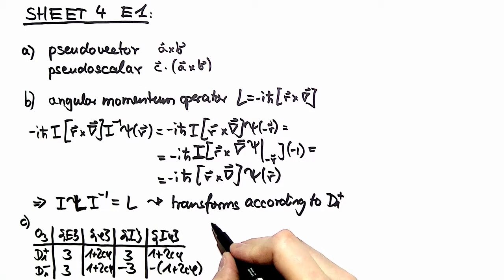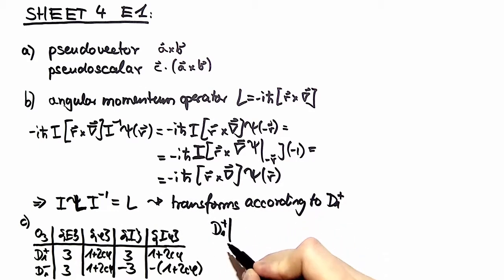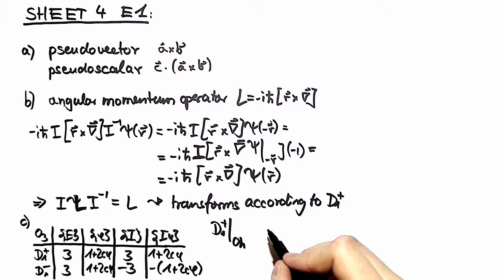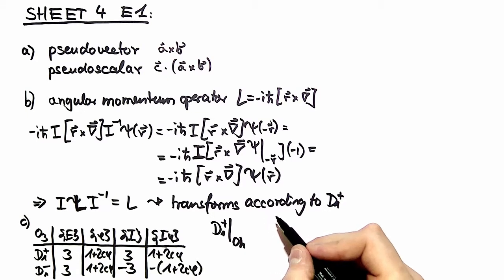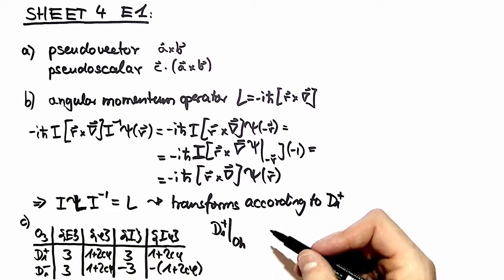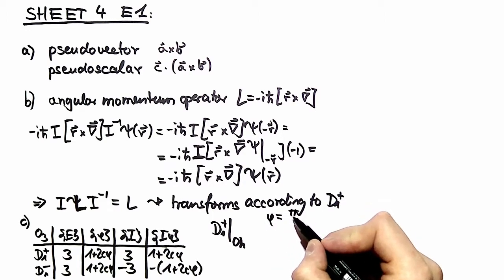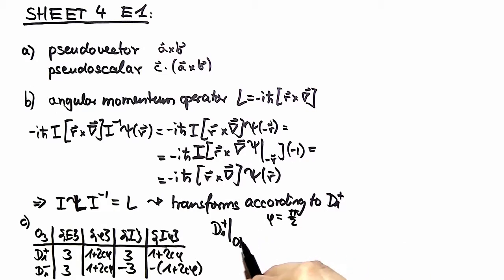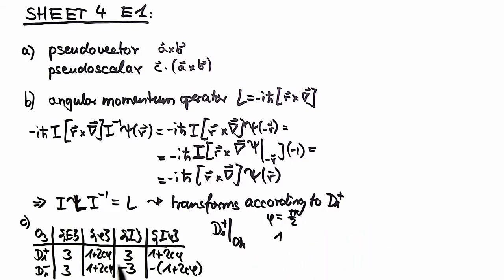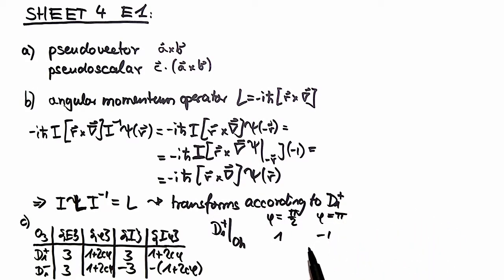Now we are ready to investigate how D1 plus decomposes when restricted to OH. What do we mean by that? We restrict the angles of rotation to the rotations allowed in OH. We restrict our angle to, for example, pi half, and then we obtain a character of one. When we do the same with pi, we obtain a character of minus one.